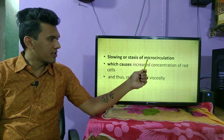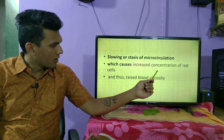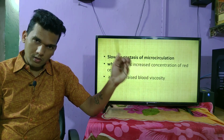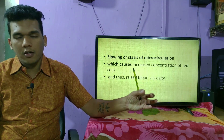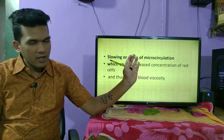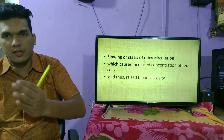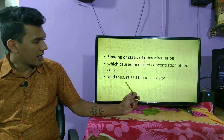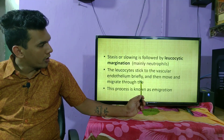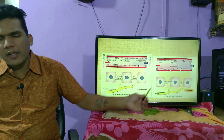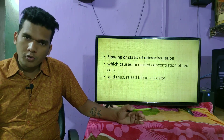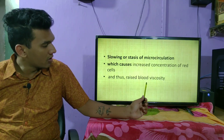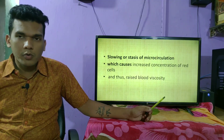The next step is slowing or stasis of the microcirculation, which causes increased concentration of red cells and raises blood viscosity. Blood is brought in by the dilated arteries, but since the veins remain at normal size they cannot take up the increased amount of blood, causing circulatory stasis. Additionally, fluid is already lost by transudation into extracellular spaces, so what remains in the injured area is predominantly red blood cells, further increasing blood viscosity.